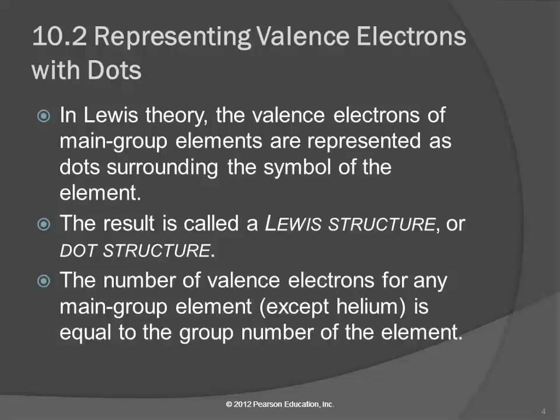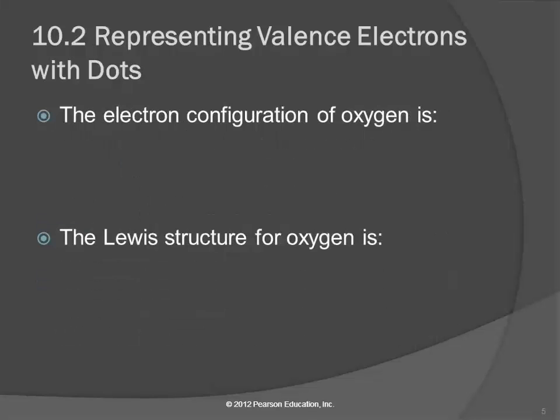So let's remember from the previous chapter that the number of valence electrons for the main group elements — and those are the only ones we'll talk about here — are equal to the group number. So that's the A group numbers: 1A, 2A, 5A, 7A, except for helium. Helium and hydrogen just have to be exceptions to everything.